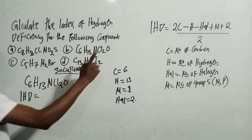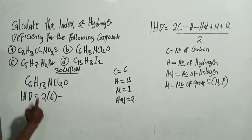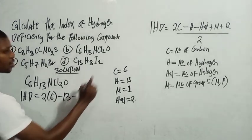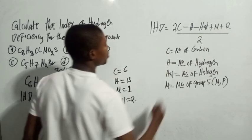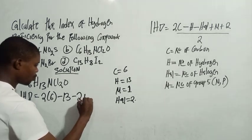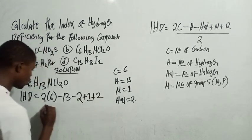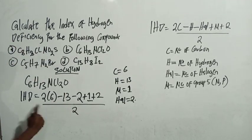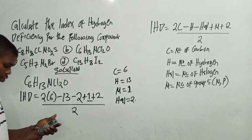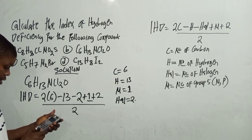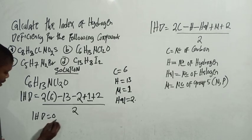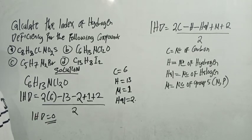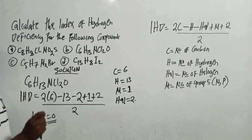Applying the formula: IHD = (2 × 6) minus 13, minus 2 (halogens), plus 1 (group five element), plus 2, all over 2. Working that out gives IHD = 0. There is no double bond and no ring in this compound.